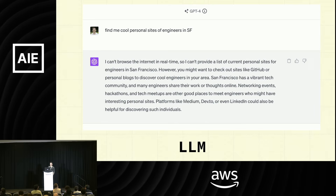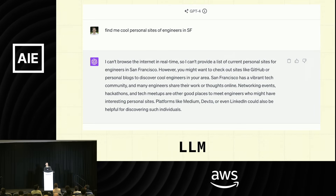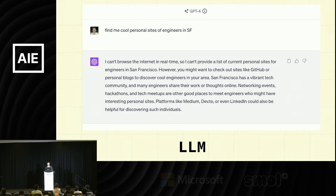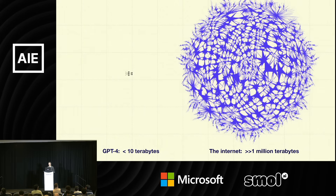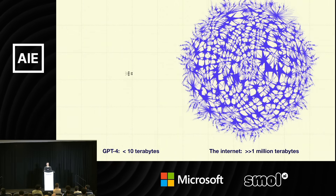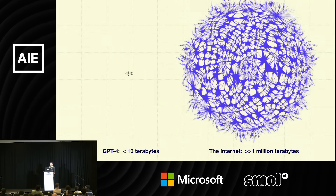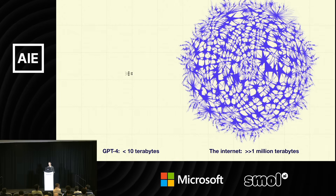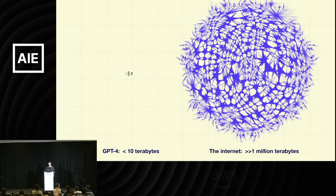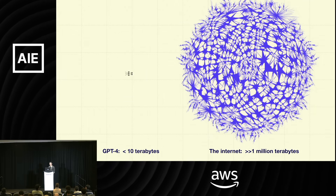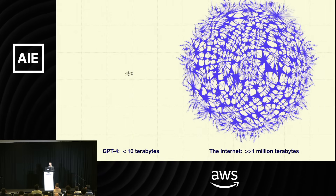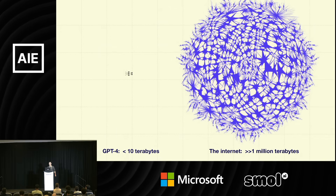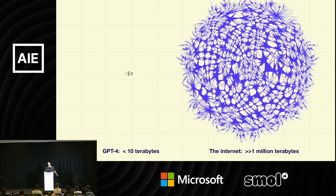For example, if you ask an LLM like GPT-4, 'find me cool personal sites of engineers in San Francisco,' it can't — it just doesn't have that in the weights. There's a very simple information theory argument: there literally isn't enough information in the weights of GPT-4 to store the whole web. GPT-4 has, we think, something like a couple trillion parameters — less than 10 terabytes in the weights — and the internet is over a million terabytes, just for documents. There are also images and video, which is way more.